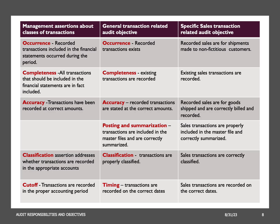The accuracy assertion pertains to the monetary amounts and other data associated with transactions and events presented in the financial statements. It asserts that the recorded amounts are precise, properly calculated, and free from material errors. The auditor's objective is to gather sufficient and appropriate audit evidence to confirm that the monetary figures, calculations, and other numerical data are accurate and in accordance with relevant accounting standards. For example, for a software company that recognizes revenue from software licenses, the accuracy assertion involves confirming that the revenue recorded accurately reflects the actual sales prices and quantities of licenses sold.